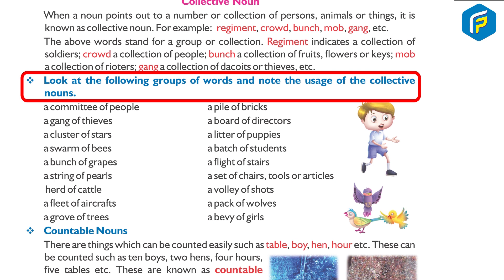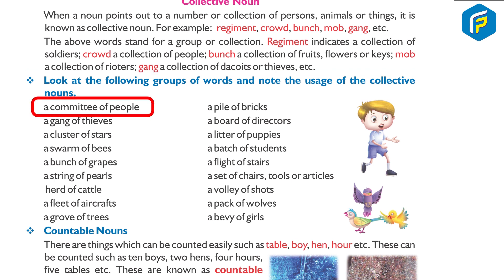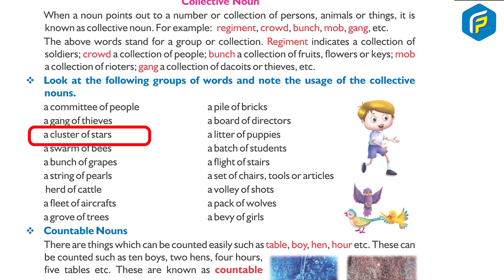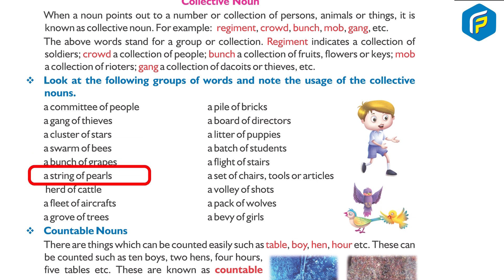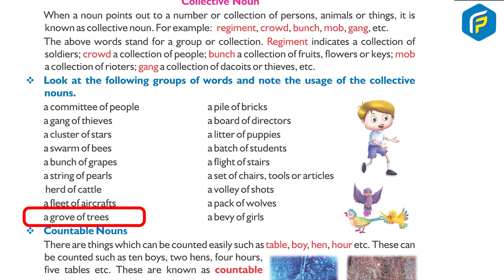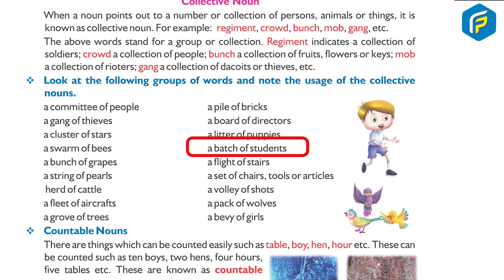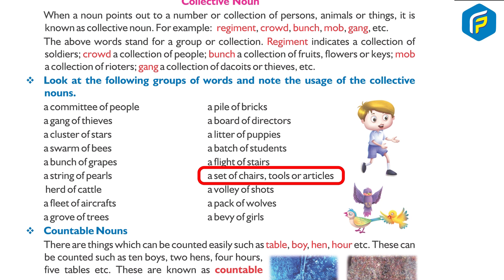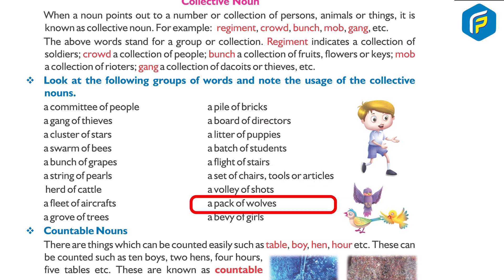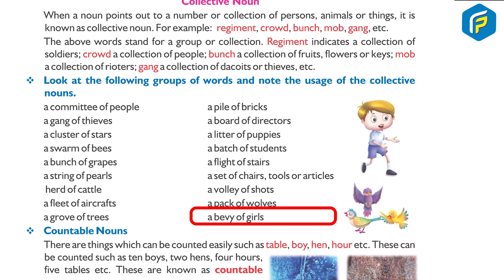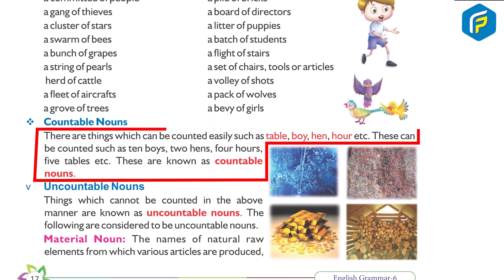Look at the following groups of words and note the usage of the collective noun: a committee of people, a gang of thieves, a cluster of stars, a swarm of bees, a bunch of birds, a string of birds, a herd of cattle, a fleet of aircraft, a group of trees, a pile of bricks, a board of directors, a litter of puppies, a batch of students, a flight of stairs, a set of chairs/tools/articles, a volley of shots, a pack of wolves, a bevy of girls.